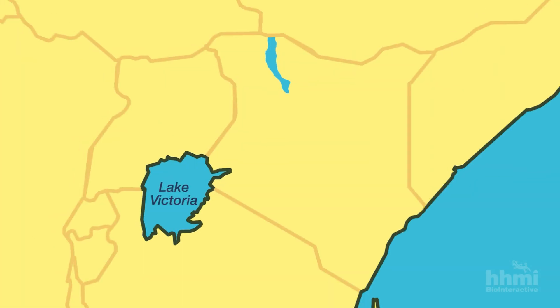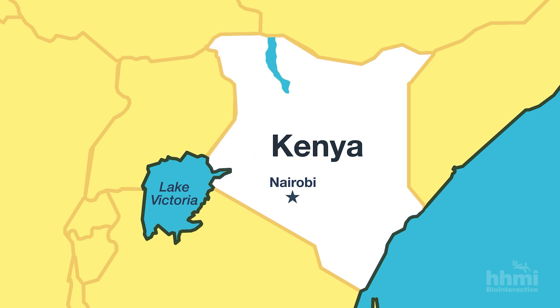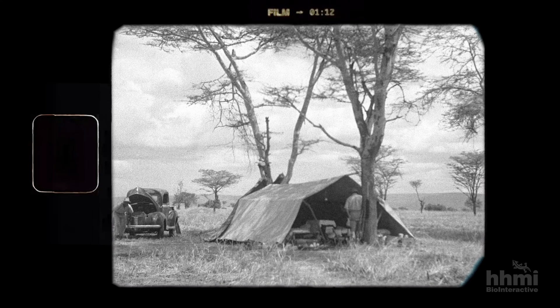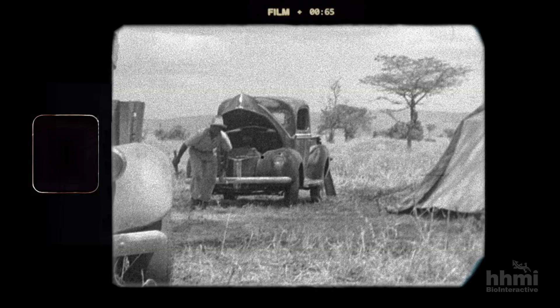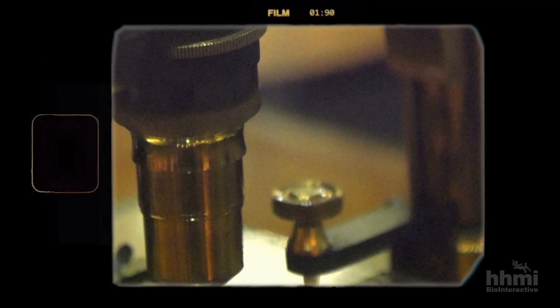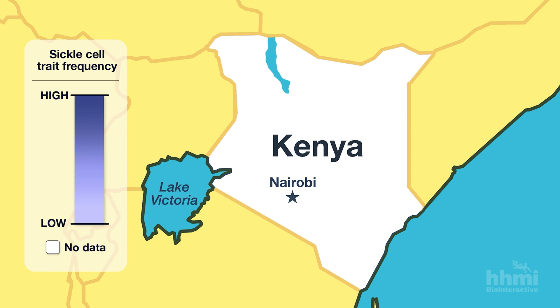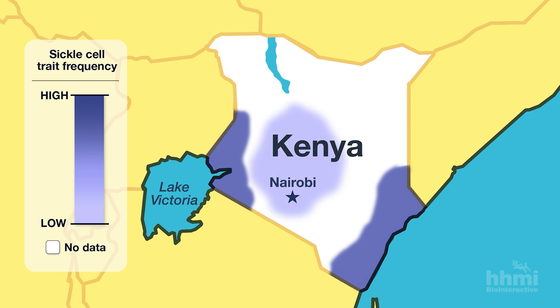Allison used this simple test to measure the frequency of sickle cell trait in parts of Kenya. He could do it in the field with a small traveling microscope run off a car battery. After analyzing hundreds of samples, an interesting geographic pattern started to emerge. High frequencies of people carrying the sickle cell character appeared on the coast and near Lake Victoria, with very low frequencies in the high country in between — in Nairobi.